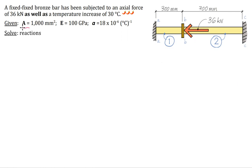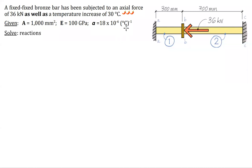We're given some basic information. The cross-sectional area of member one and member two is equal to 1000 millimeters squared. We also have a modulus of elasticity of 100 gigapascals, and the coefficient of thermal expansion — 18E-6 strain per degree Celsius change in temperature. That's the best way to think about that notation. We want to figure out what the reactions are.